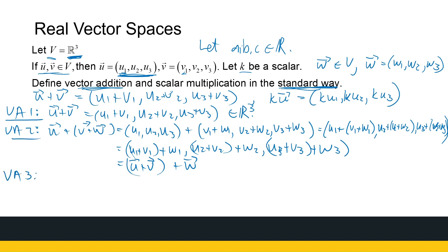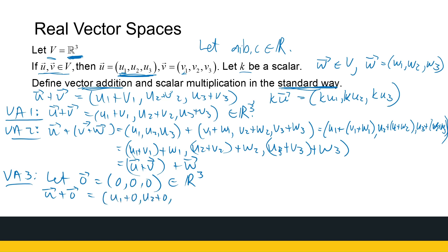The third axiom says we can find a zero vector. Working in R3, the zero vector is the ordered triplet (0, 0, 0), which is clearly in R3. Then U plus zero equals (U1 plus 0, U2 plus 0, U3 plus 0). Since zero is just a real number, that gives (U1, U2, U3), which is back to U. You can similarly show zero plus U equals U.